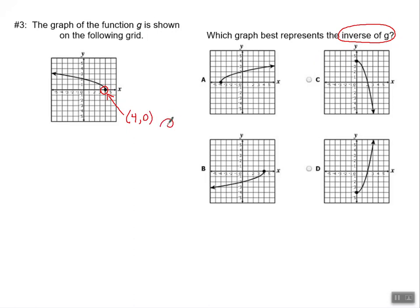On the inverse, I'll do a little inverse thing here. I'm going to swap, and I will have 0, 4. So I really need to look at which one of these four graphs has the starting point at 0, 4. Well, 0, 4, it's not here. 0, 4, aha, it is right there.